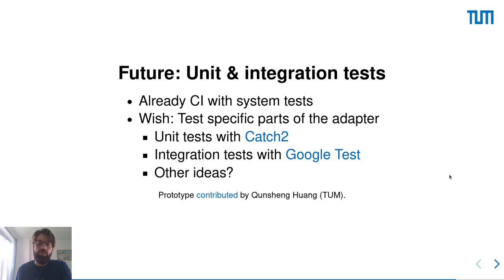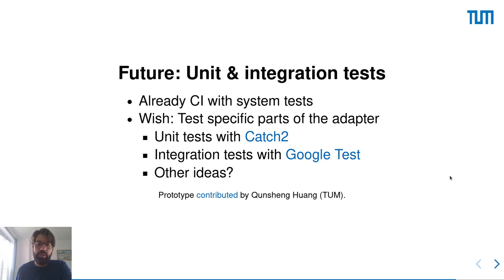In the future, what we really need is to extend the continuous integration we already have with system tests, so that it also includes unit and integration tests. We have already a quite old prototype that uses CATS2 and Google Tests for this, but we need to look deeper into it. If you want to contribute, you are very welcome.